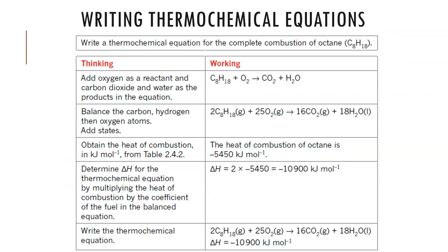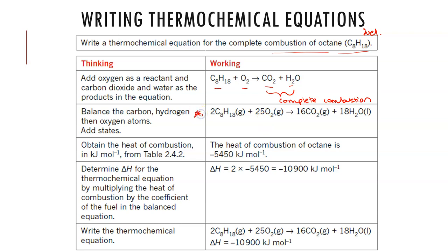Let's go through a couple of examples of writing thermochemical equations. We've been asked to write a thermochemical equation for the complete combustion of octane. First, we write the balanced chemical equation — starting with our fuel, reacting with oxygen, producing CO₂ and H₂O as products of complete combustion. We balance this by starting with carbon first, then hydrogens. In this case we end up requiring 25/2 oxygens, so we multiply everything by 2.